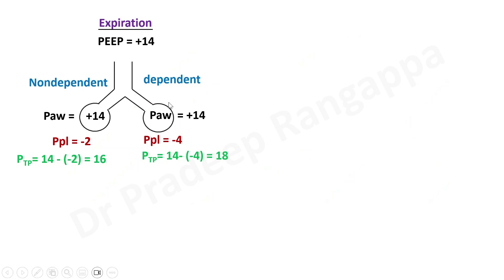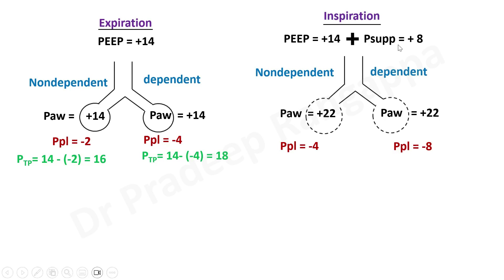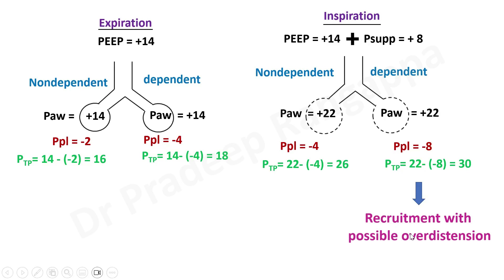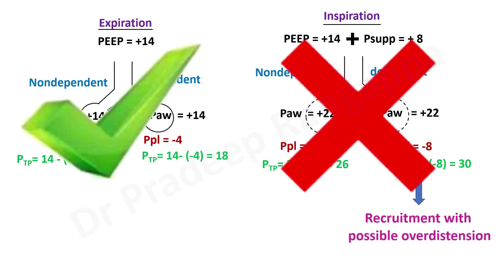A third, cleverer registrar sets PEEP at 14. During expiration, PEEP 14 opens the recruitable alveoli — transpulmonary pressures are 16–18. But he again applies pressure support of 8, so inspiratory alveolar pressure = 22; transpulmonary pressure reaches 26 on the recruitable lung and 30 on the non-dependent lung. Plateau pressure has hit 30 cmH₂O — the upper limit. He has recruited well, but at the cost of possible overdistension and barotrauma.